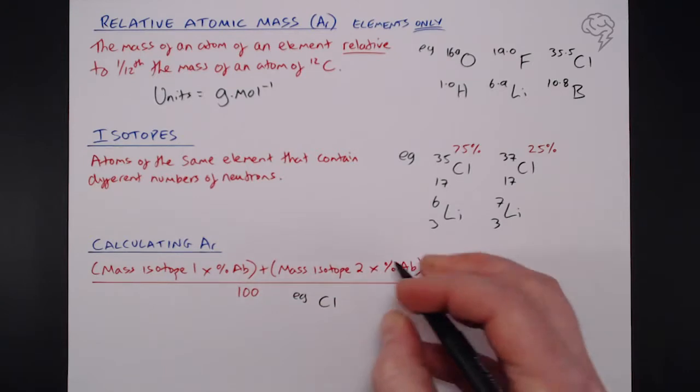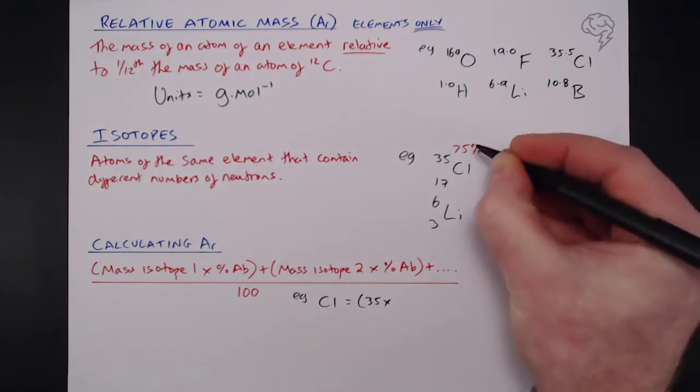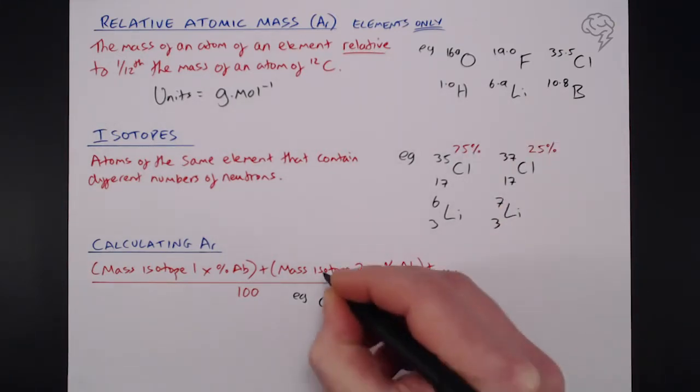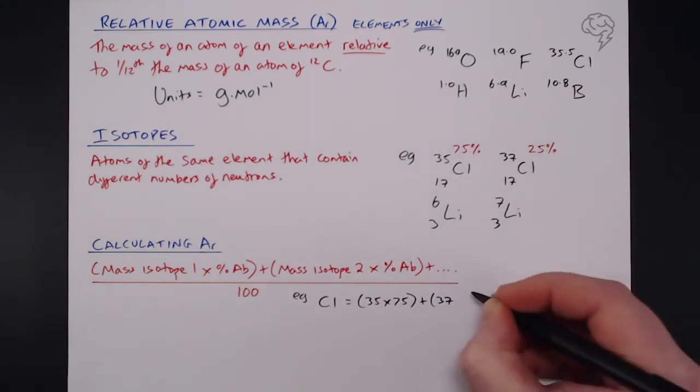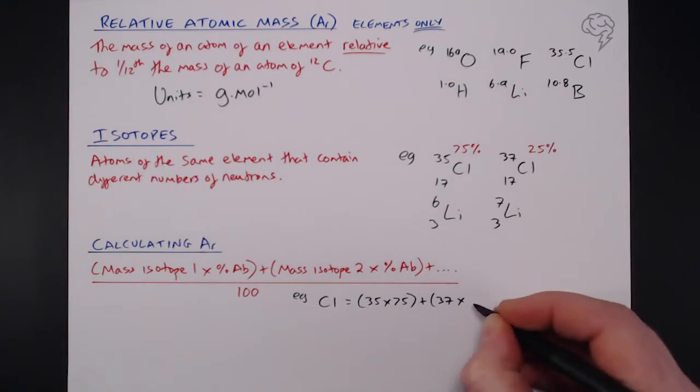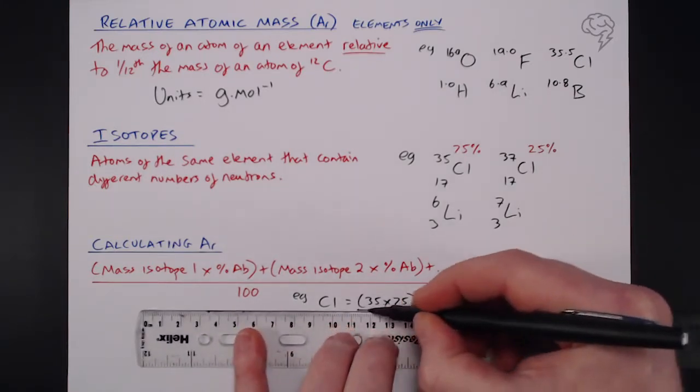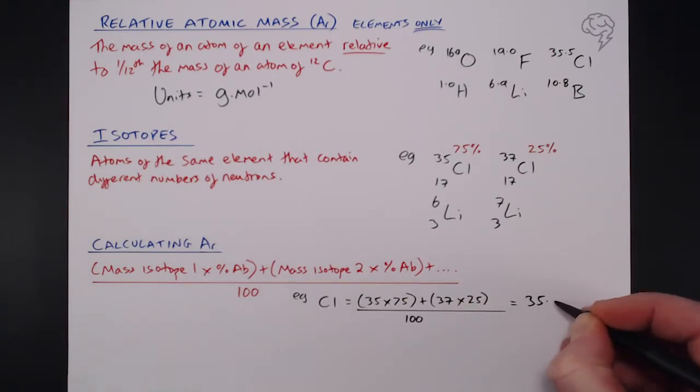your relative atomic mass would be the mass of the first isotope, which is, of course, 35, multiplied by its percentage abundance, which is 75. Add that to the mass of isotope 2, which is 37, multiplied by its percentage abundance here, and again, all over 100, and that, of course, equals 35.5. Let's not forget units at grams per mole.